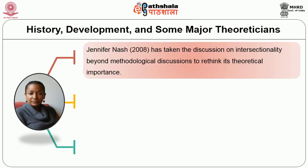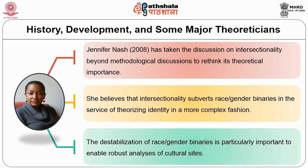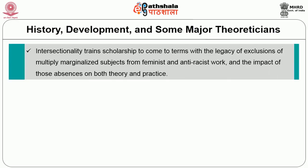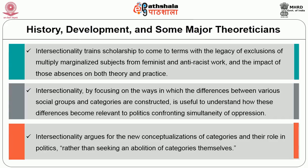Jennifer Nash has taken the discussion on intersectionality beyond the methodological to rethink its theoretical importance. She believes that intersectionality subverts race and gender binaries in the service of theorizing identity in a more complex fashion. The destabilization of race and gender binaries is particularly important to enable robust analysis of differences at cultural sites. Intersectionality trains scholarship to come to terms with the legacy of exclusions of multiply marginalized subjects from feminist and anti-racist work. Intersectionality argues for the reconceptualization of categories and their role in politics, rather than seeking an abolition of categories themselves.